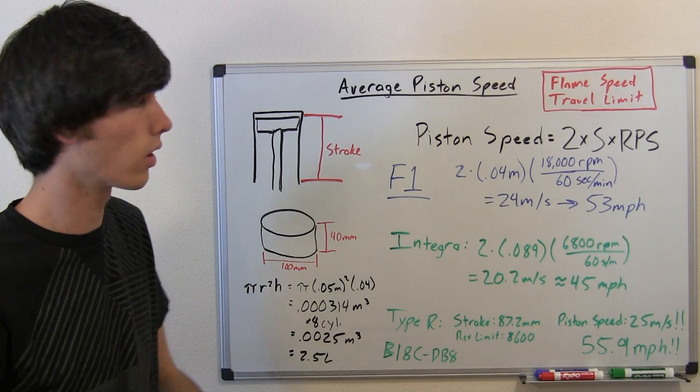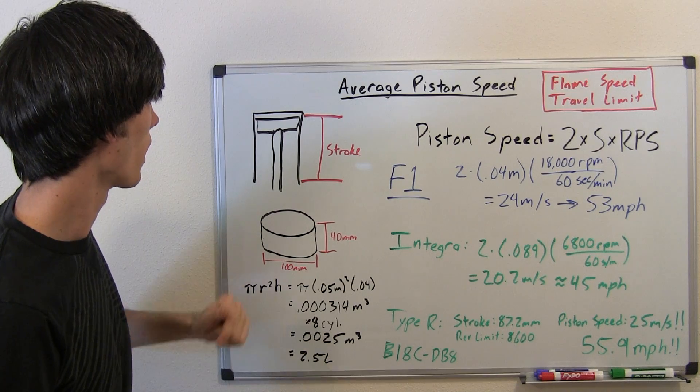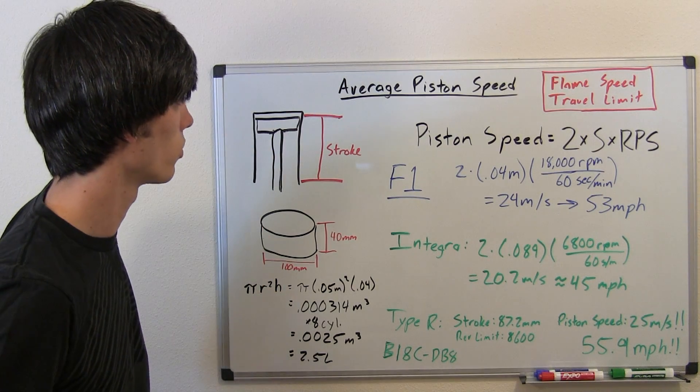Let's use one revolution as our time limit. So up and down. How long does that take to happen? And how far did it travel within that?